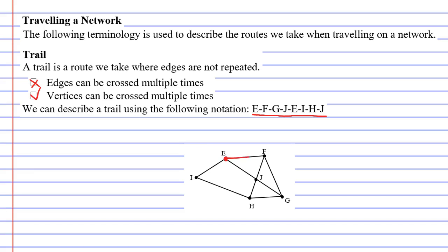Starting at E we travel to F, then to G, then to J, then back to E — so we've passed E twice now. Then we travel to I, then to H, and finally finish up at J. Notice that we pass through vertex E twice and vertex J twice, but we never went over an edge more than once. So this is a trail.